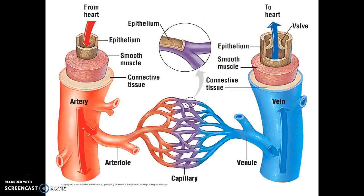Here we see arteries, veins, and capillaries. The coloration of these blood vessels lets us know that we're currently looking at the systemic circuit, because it's the systemic circuit in which oxygenated blood is coming from the heart, and deoxygenated blood is returning to the heart. If we were looking at the pulmonary circuit, the colors would be switched, and the arteries would be blue and the veins would be red.